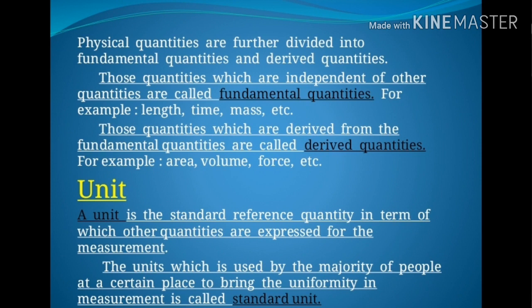Fundamental quantities are those physical quantities which are independent of other quantities — meaning they do not depend upon other quantities. For example, length, time, and mass. The unit of length is meter, which does not depend upon others. The unit of time is second; it does not depend on other quantities — for example, time does not depend upon length.